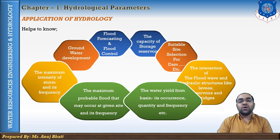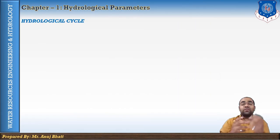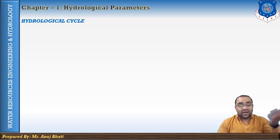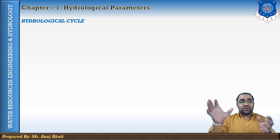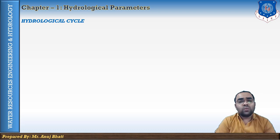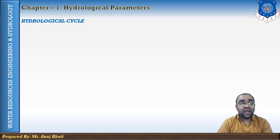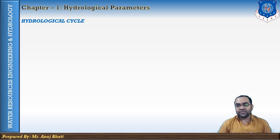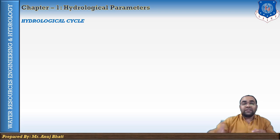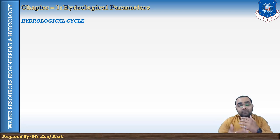Now we will discuss the hydrological cycle — how it happens and what aspects concern it. Water can occur in three physical phases: solid, liquid, or gas, and is found in nature in all these phases in large quantities. Depending on the environment, water can quickly change its phase — from solid to liquid by adding heat, and from liquid to gaseous form by increasing heat further.